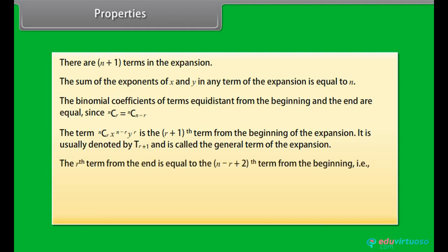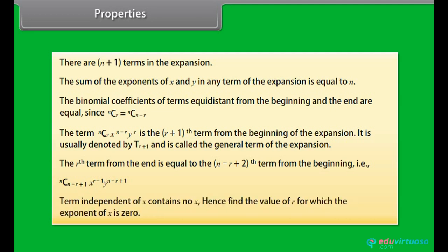The rth term from the end is equal to the (n − r + 2)th term from the beginning. That is, nC(n−r+1) · x^(r−1) · y^(n−r+1). The term independent of x contains no x; hence find the value of r for which the exponent of x is 0.